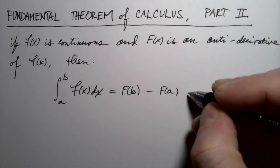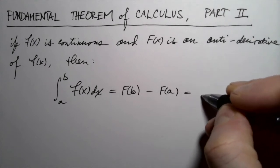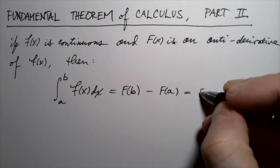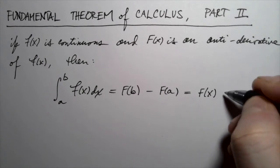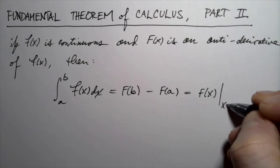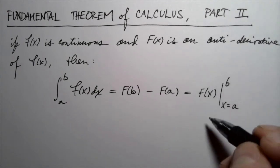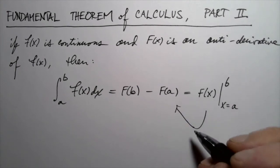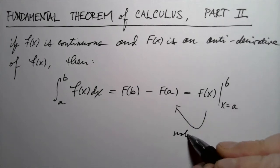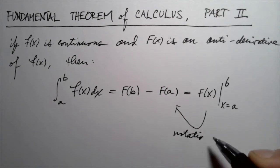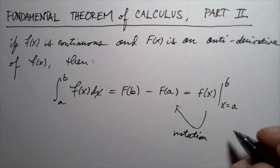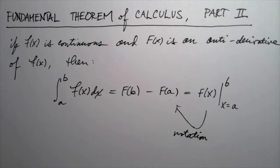I like to write this right-hand side in a slightly different way. You'll see slightly different notations for this from different mathematicians — it doesn't really matter, it's all the same thing. That's just notation for F of b minus F of a, and you'll see how that works in the problems we'll do. It's just a handy way of organizing calculations.